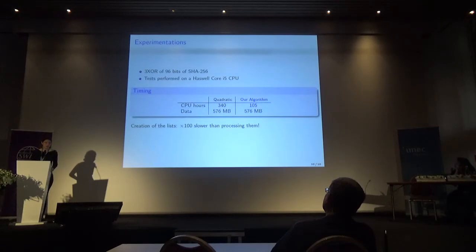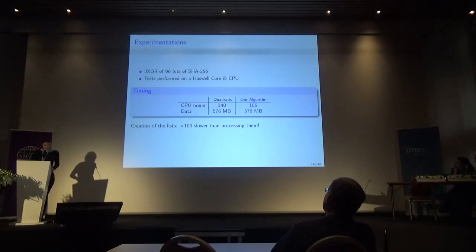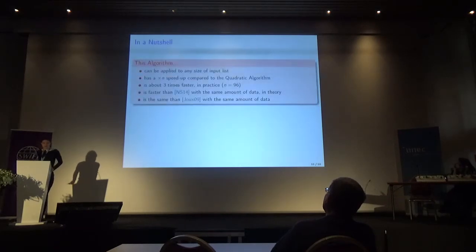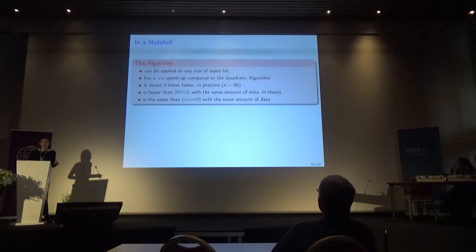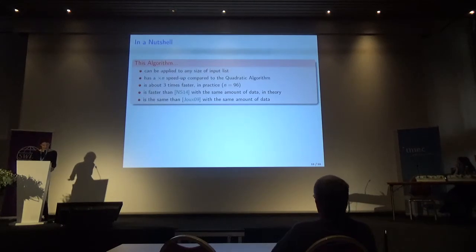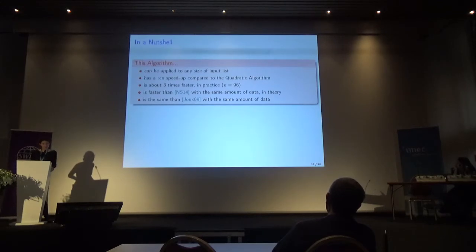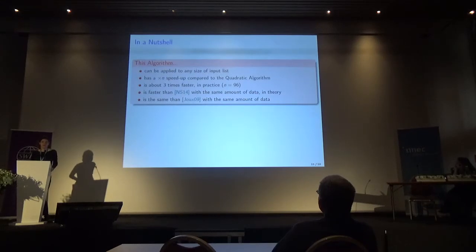We also noticed that the creation of the list is what takes the most time — about 100 times slower than processing the list on the same computer. To summarize: this algorithm can be applied to any size of input list. It has a speedup over the quadratic algorithm with the same amount of data, is in practice three times faster with n equal to 96, and is also faster than the algorithm by Nikolic and Sasaki with the same amount of data using the clamping trick. With the same amount of data, it is exactly equivalent to Jules's algorithm.